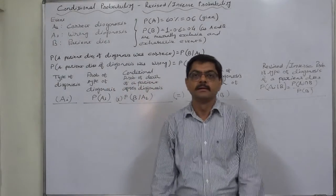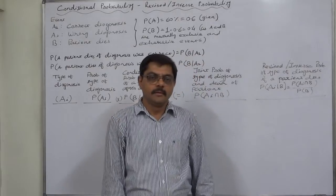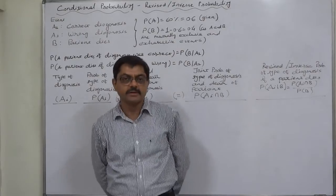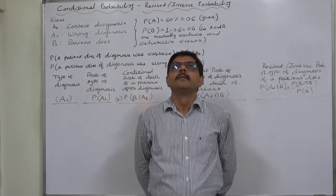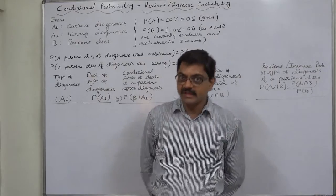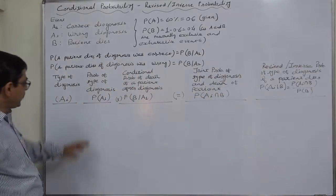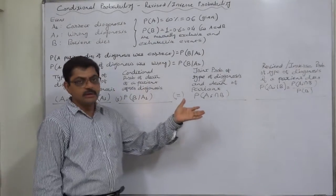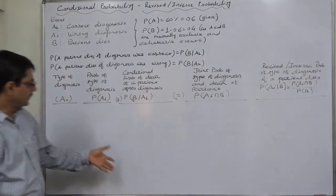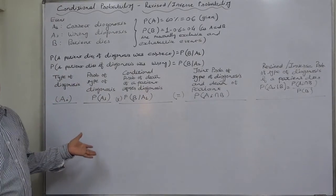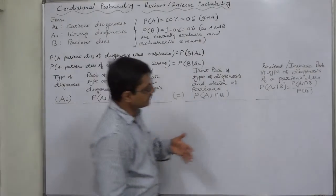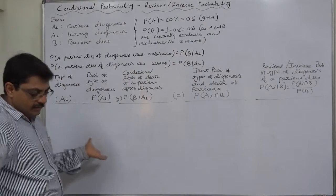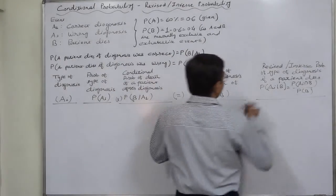Hello friends, one more case of revised probability — also called inverse probability, reversal of probability, Bayes' theorem. This is a case where prior probabilities are available and we come to know about the happening of any event, the cause of which is the prior event, and on the basis of all these we calculate the posterior probability of the causes.